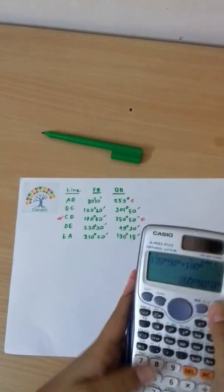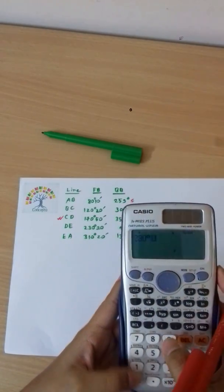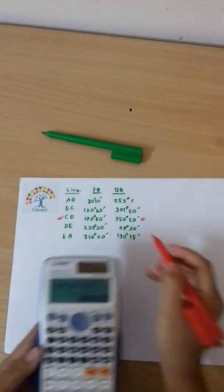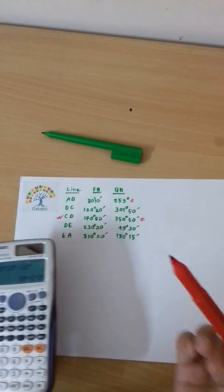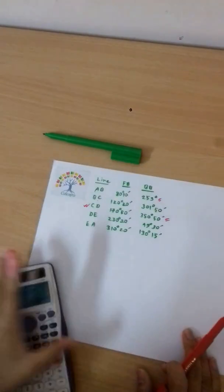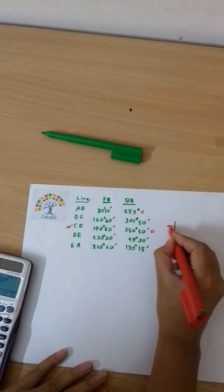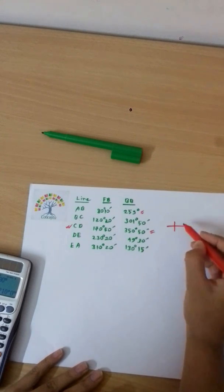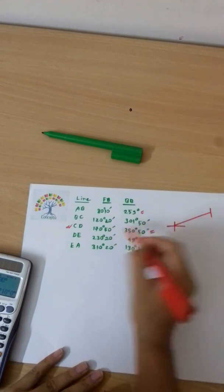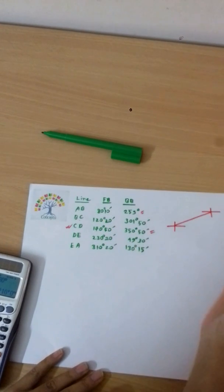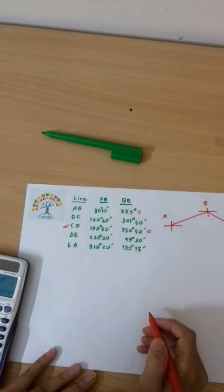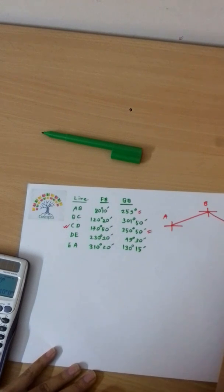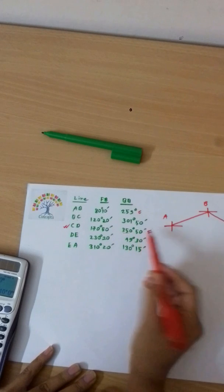Now analyzing the quadrants: Station B is in the first quadrant. BC with 120 degrees 20 minutes is in the second quadrant. Station C is also in the second quadrant at 170 degrees 50 minutes. Station D with 350 degrees 50 minutes is in the fourth quadrant.